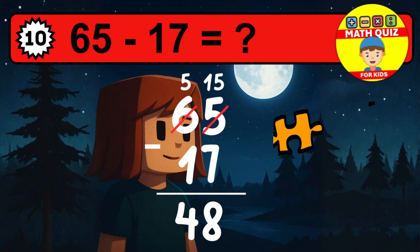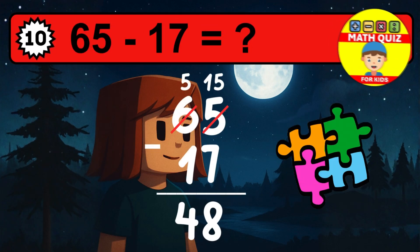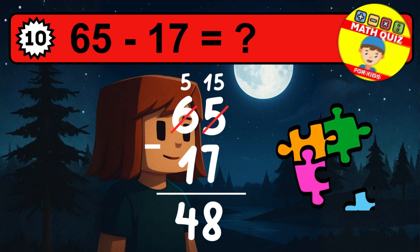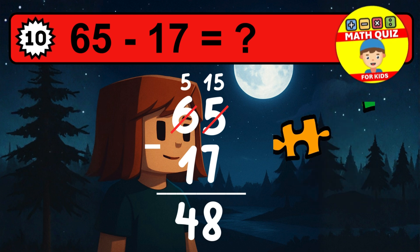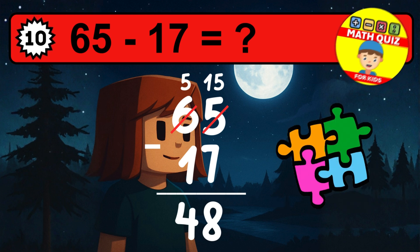Then we go to the tens. Five minus one is four. The final answer is forty-eight.